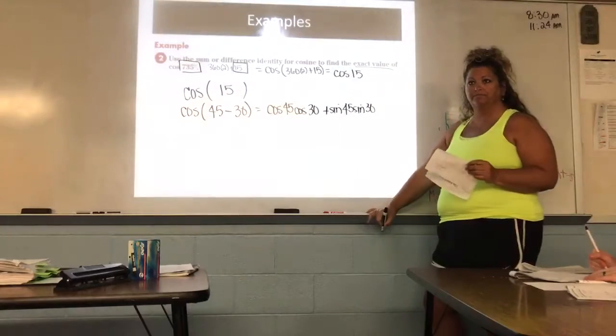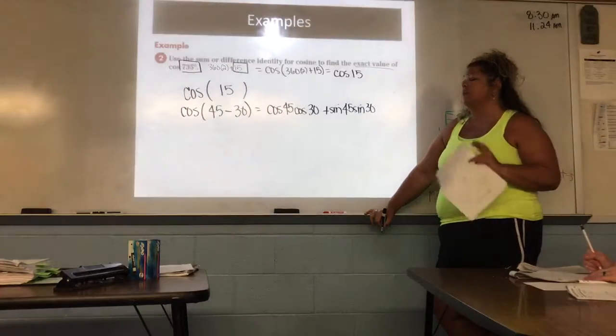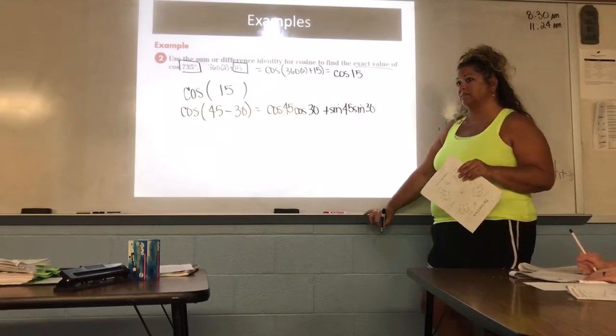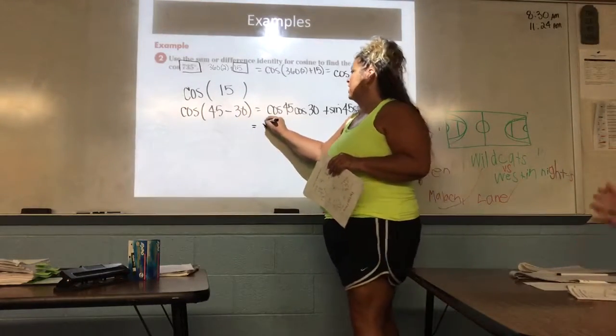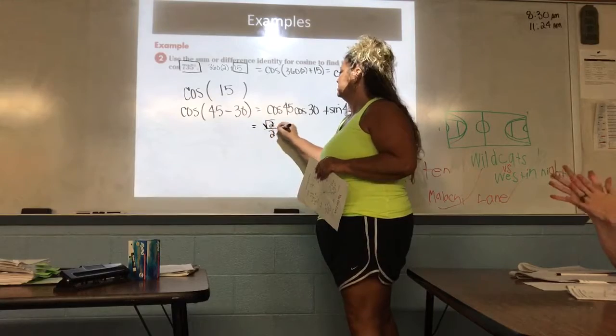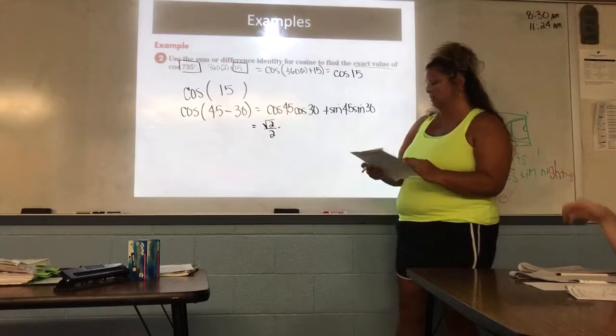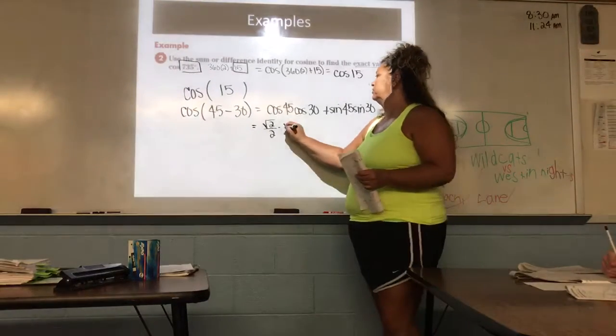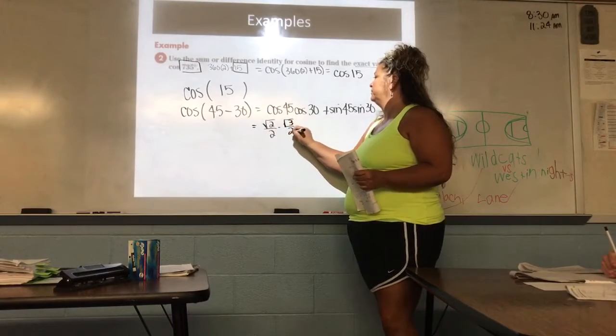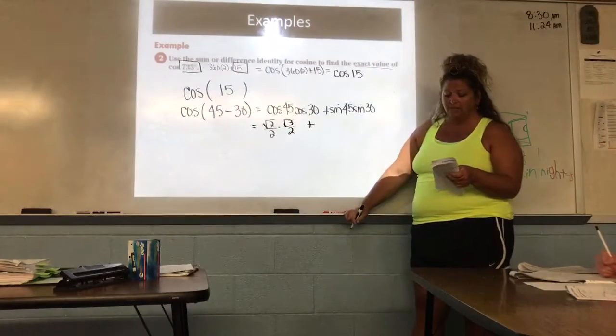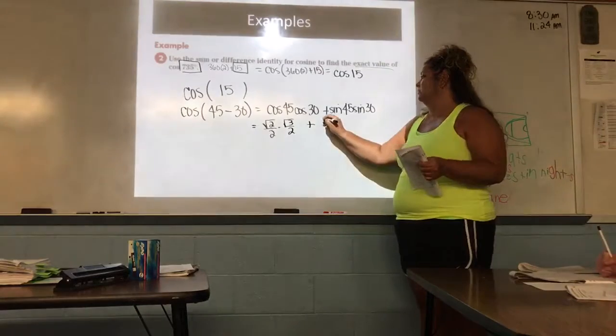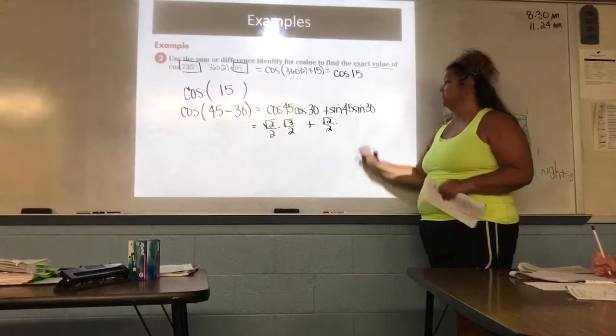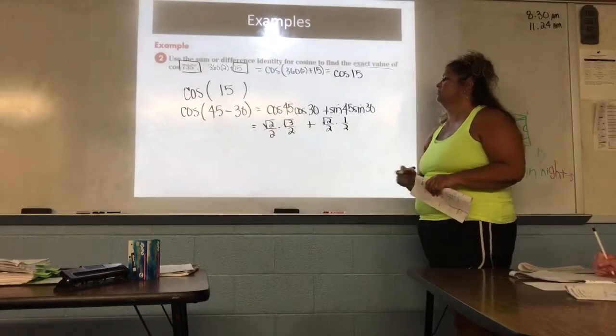Cosine of 45 minus 30 equals cosine 45 times cosine of 30. Then plus sine of 45 times sine of 30. Good. So now we can look at our unit circle. What is the cosine of 45? What's my value? Root 2 over 2. Root 2 over 2 times what is cosine of 30? Root 3 over 2. So root 3 over 2. Plus what's sine of 45? Root 2 over 2. Times what is sine of 30? One half.